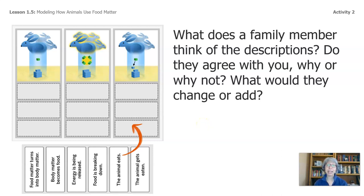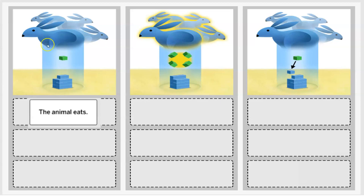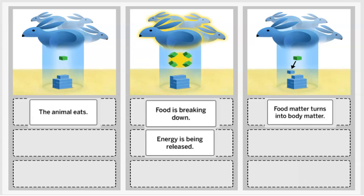Did you add anything? Let's take a look. Let's start with the first column. The animal eats plant matter, and that's why the cube is represented as a green color — it represents the plant matter that it has eaten. Let's take a look at the next column. The rabbit's body digests the plant matter by breaking it down into smaller matter. Food is breaking down, and energy is released in this process. Let's look at the third column: food matter turns into body matter, that's why the green cube turns blue.